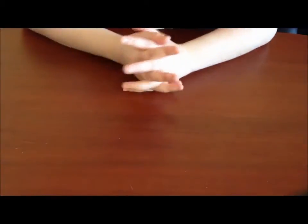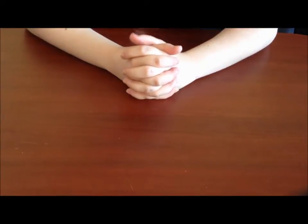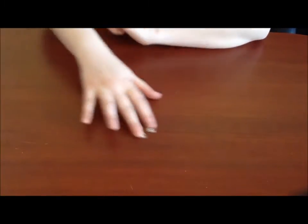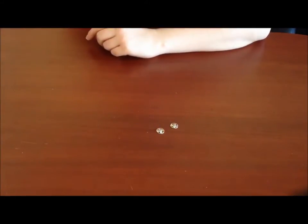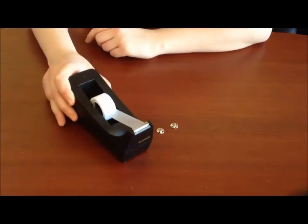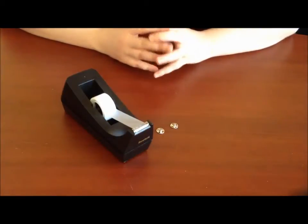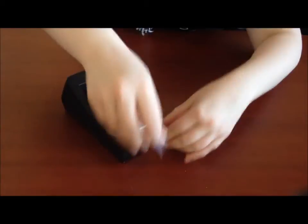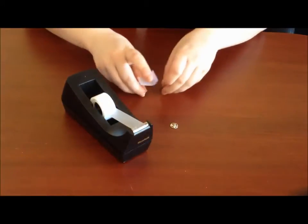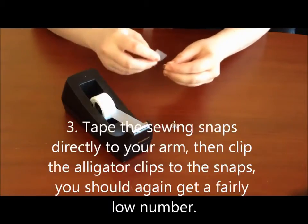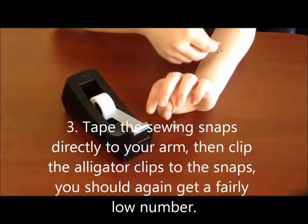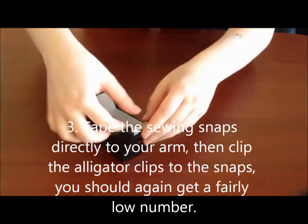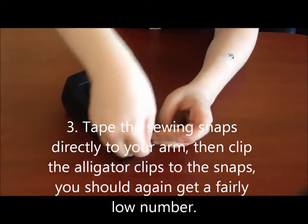So we're going to put this aside and now we're going to make our very own electrodes with which to measure the body's resistance. You're going to take two sewing snaps that you got and your tape. The first time you do this, you're going to do it without any hand sanitizer wipes or any liquid at all. You're going to take the tape and you're just going to tape the sewing snaps directly to the arm.